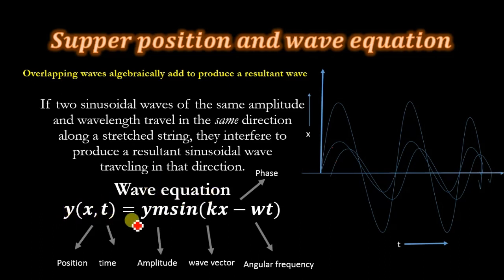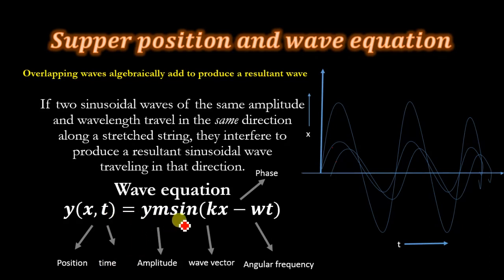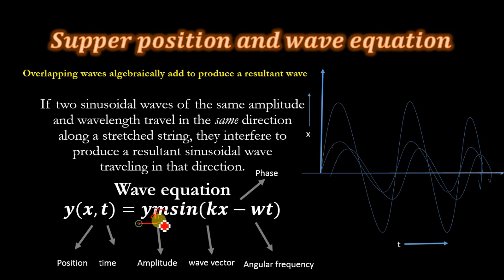The wave equation is given as y(x,t) = ym·sin(kx − ωt). This equation represents a wave as a function of position and time, where x represents position and t represents time. Here ym is the amplitude, k is the wave vector, and ω is the angular frequency. This term is the amplitude, and this is known as the phase.